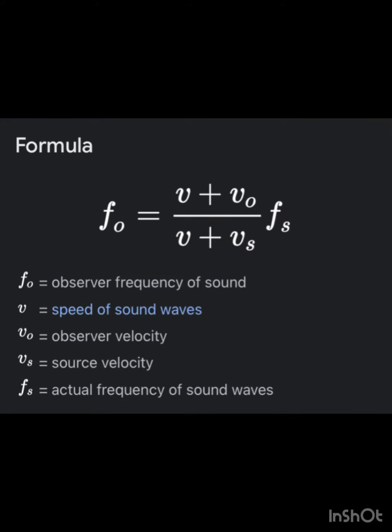The formula for the Doppler effect is F0 equals V plus V0 upon V plus Vs into Fs, where F0 is observer frequency, V for velocity, V0 is observer velocity, Vs is source velocity, and Fs is the actual frequency of the sound wave.